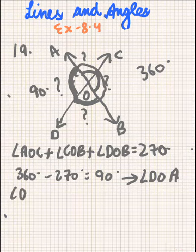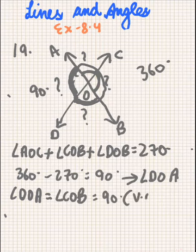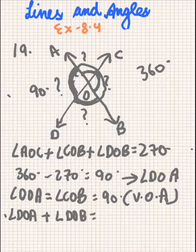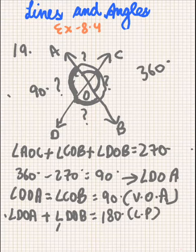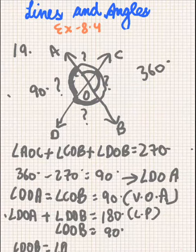Angle DOA will be equal to angle COB because these are vertically opposite angles. Angle DOA plus angle DOB will be equal to 180 degrees because these form a linear pair. And angle DOB will be equal to angle AOC because these are also vertically opposite angles.